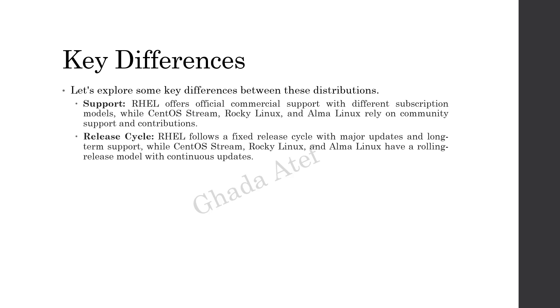RHEL follows a fixed release cycle with major updates and long-term support, while CentOS Stream, Rocky Linux, and Alma Linux have a rolling release model with continuous updates.